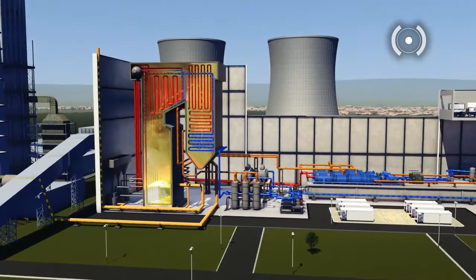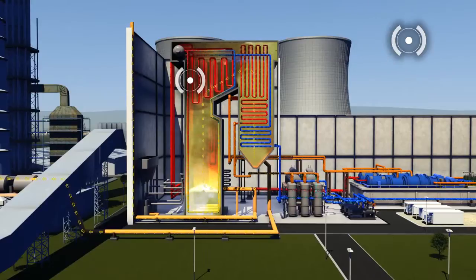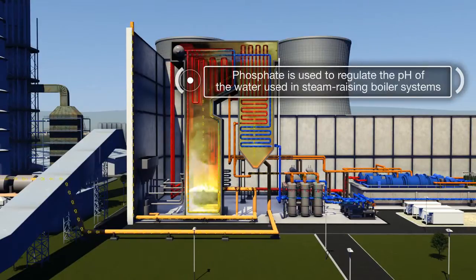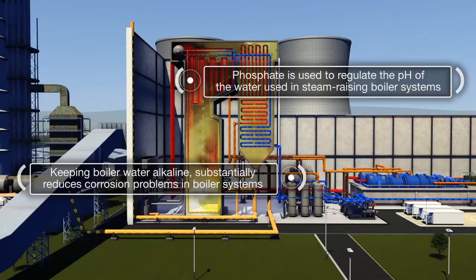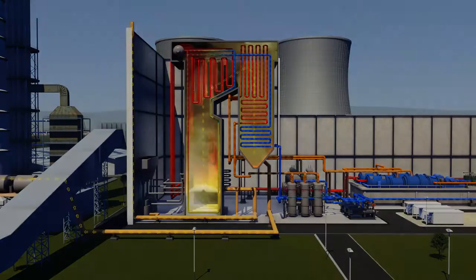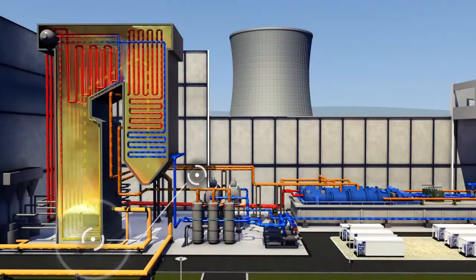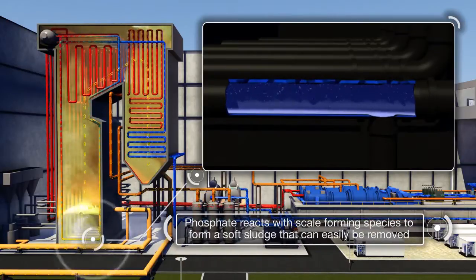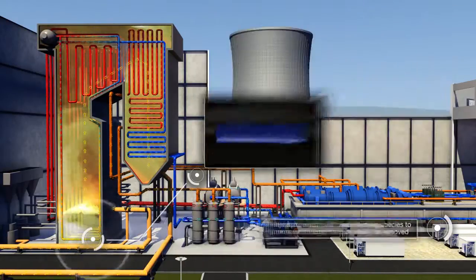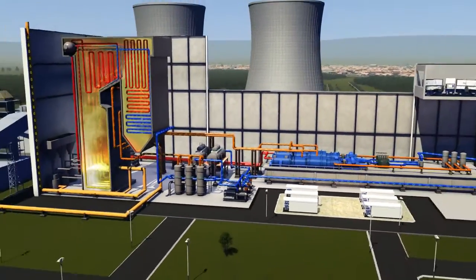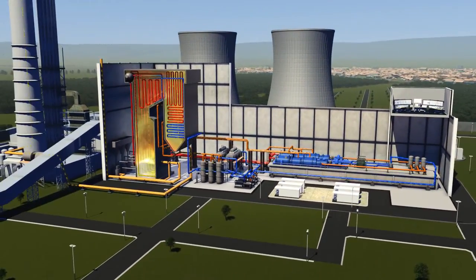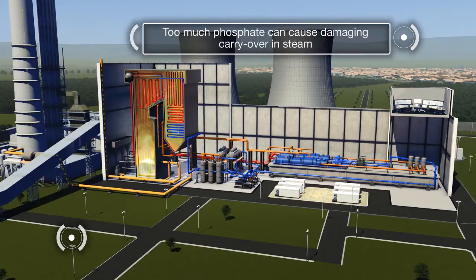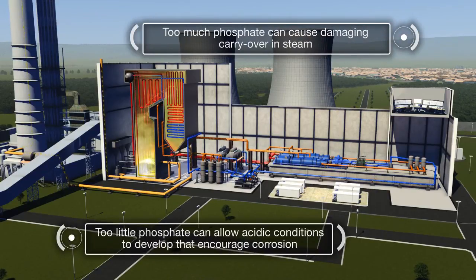Phosphate is measured and used to regulate the pH of the water used in steam-raising boiler systems. Keeping the boiler water alkaline substantially reduces corrosion problems in boiler systems. Phosphate also reacts with scale-forming species such as calcium and magnesium to produce a soft sludge, therefore reducing scaling problems in the boiler and the turbine. Dosing of the phosphate must be controlled carefully: too much phosphate can cause damaging carryover in steam, whilst too little can allow acidic conditions to develop that encourage corrosion.